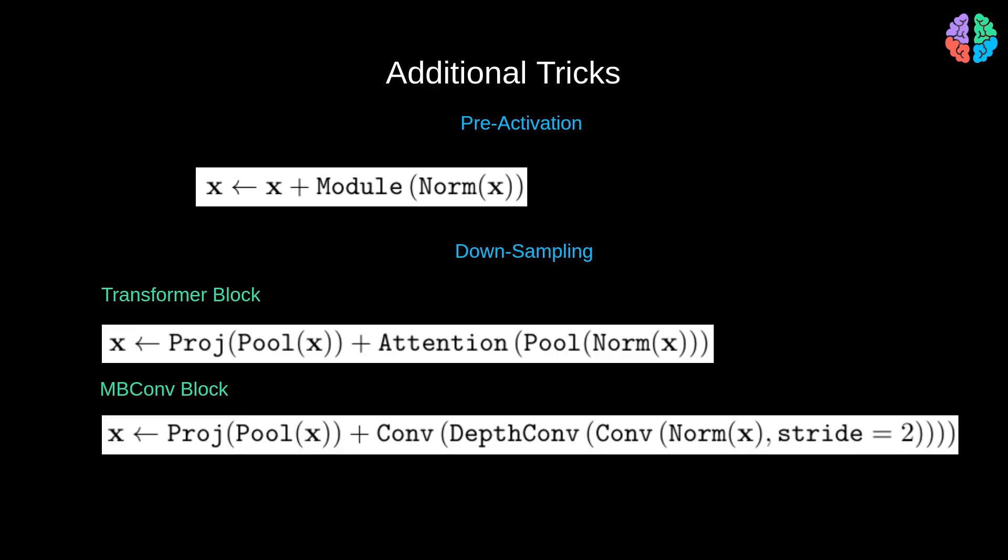All that it means is that we first normalize the input with batch norm or layer norm and pass it through our module. But finally and most importantly, we add the output of the module directly to the input. So this is somewhat like a residual network and suddenly your entire block learns more from the residue rather than from the input.